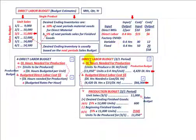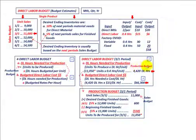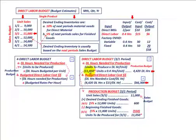Now we can calculate the direct labor budget for March. First, we determine direct labor hours needed for production — taking the units to be produced times the direct labor hours per unit. The units to be produced are 11,050. We're only selling 11,000, but we need to produce 11,050. That times 4/10 of an hour per unit gives us 4,420 direct labor hours for March.